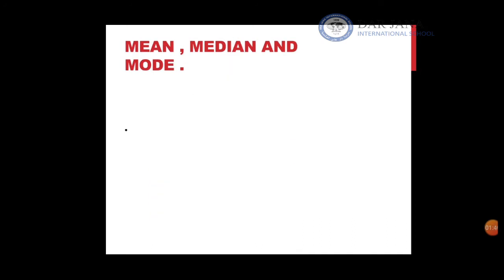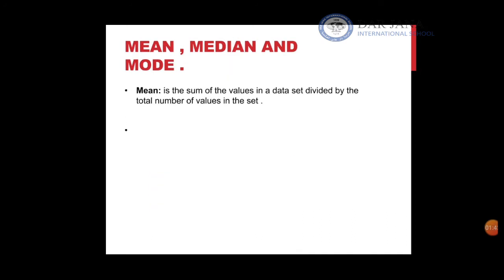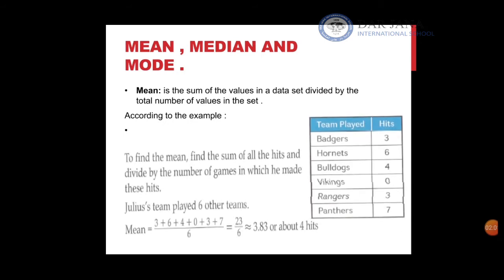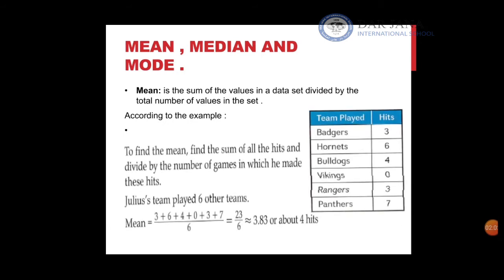We will be using a table as an example. We'll start by measuring the mean — you can think of the mean as an average. The general definition is the sum of the values in a data set divided by the total number of values. Let's take an example.